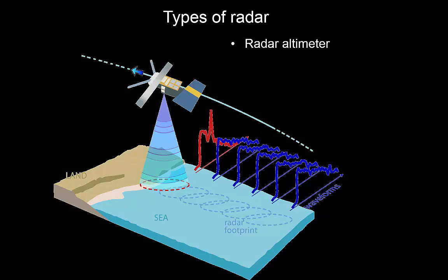Basically you've got imaging radar and you've got radar altimeters. Now a radar altimeter is very similar in the way that it operates to lidar, which we looked at in a previous video.